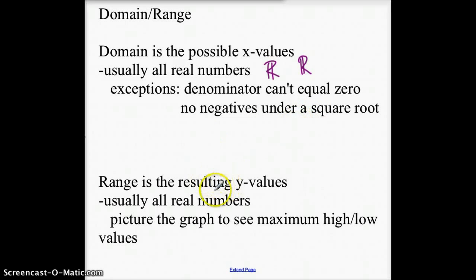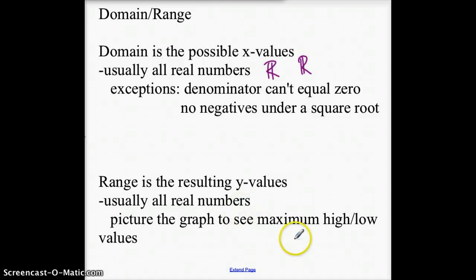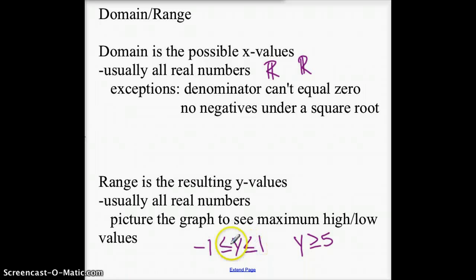Range is the resulting y values. The easiest way to think about range: the x values you plug in, and then do whatever function you have — like multiply it by 7 or add 2 to it — and think about the resulting answers you would get. It also helps to look at the graph to see what the maximum high and low values are. Since the range is y values, you might have all y values greater than or equal to 5, or y values in between two values like between negative 1 and positive 1, or again y values could be all reals.